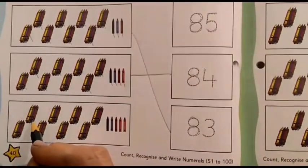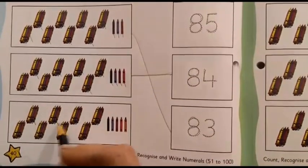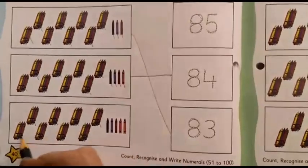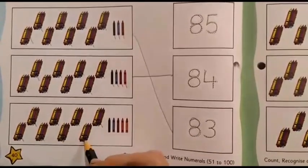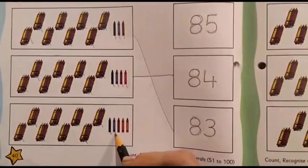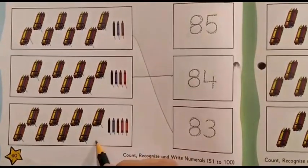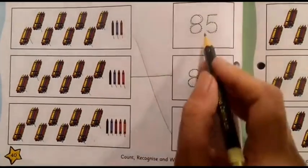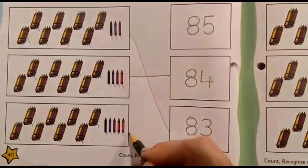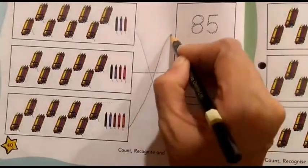Again, we will count 10, 20, 30, 40, 50, 60, 70, 80, 81, 82, 83, 84, 85. So, 85 crayons will go and match with the number 85, 85.